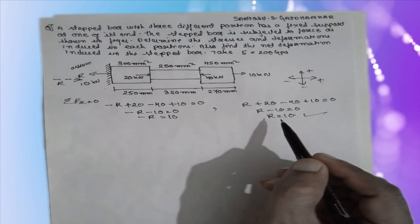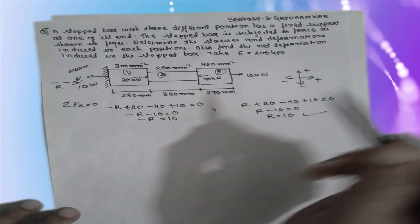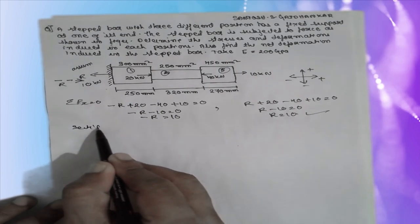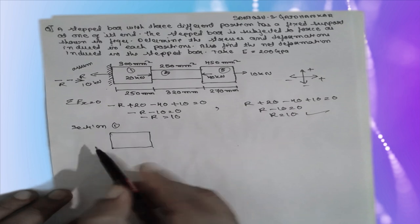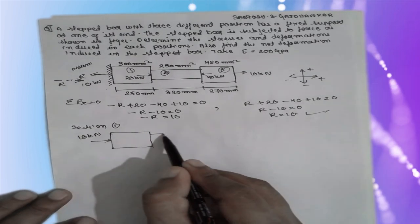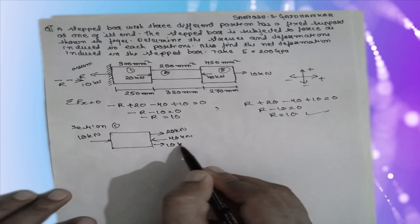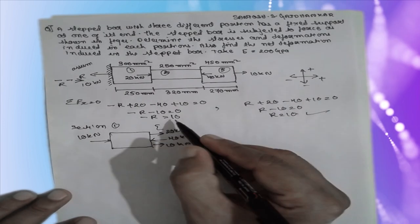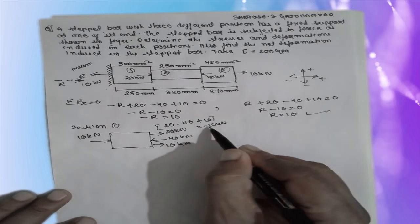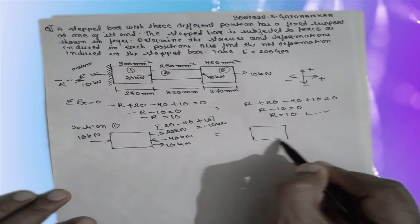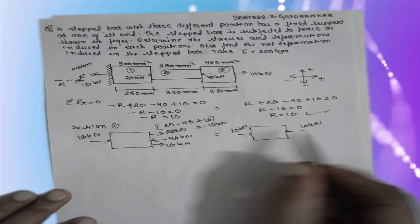Now let us solve the problem. I am dividing the bar into section 1, section 2, and section 3. For section 1, considering the free body: the reaction R is 10 kilo Newton. The net internal force from 20 minus 40 plus 10 equals minus 10 kilo Newton. The negative sign indicates the force acts in the compressive direction — so section 1 carries 10 kilo Newton compressive.